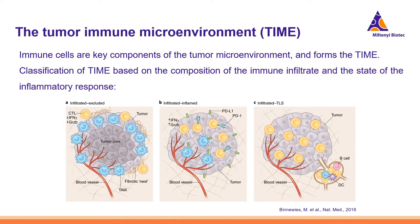The presence of a tertiary lymphoid structure, short TLS, adjacent to the tumor defines the third type, the infiltrated TLS type. A TLS is an aggregation of immune cells with a similar composition as lymph nodes, including B cells, dendritic cells and regulatory T cells. We will also have an example of this type in the presentation.